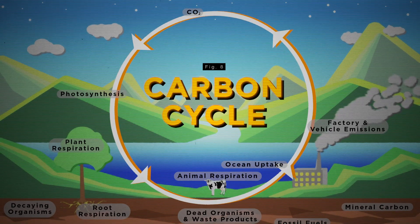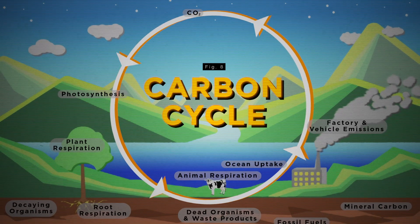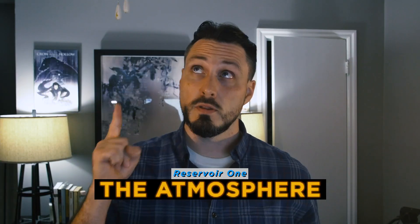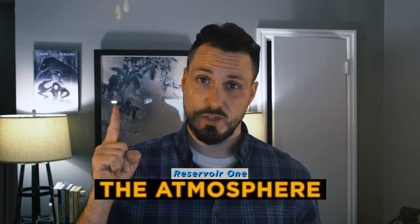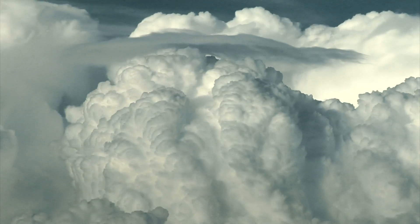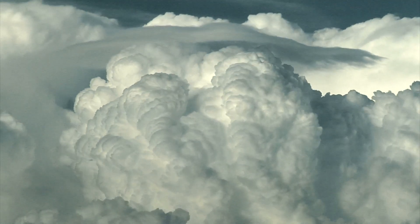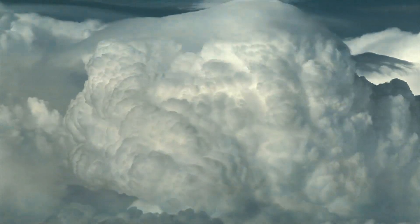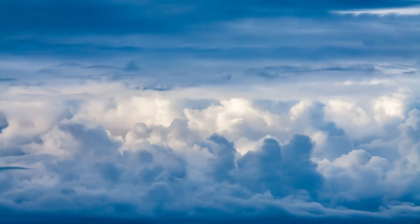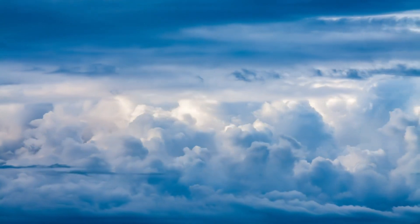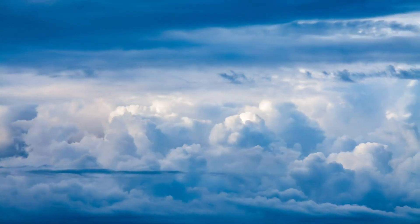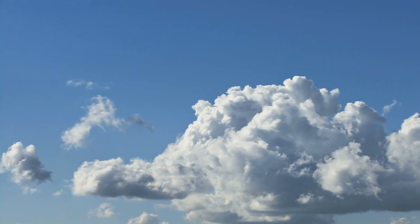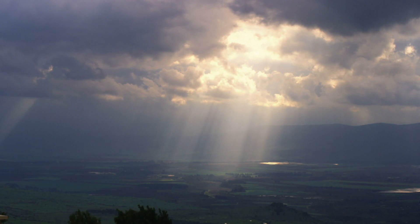In this carbon cycle, carbon is exchanged between vast reservoirs of carbon storage. The first of these reservoirs is the atmosphere. This is where carbon dioxide participates in that heat-trapping greenhouse effect, which is where the Earth gets its global average temperature — from the levels of CO2 in the air. The more CO2 there is in the air, the more heat that's trapped.